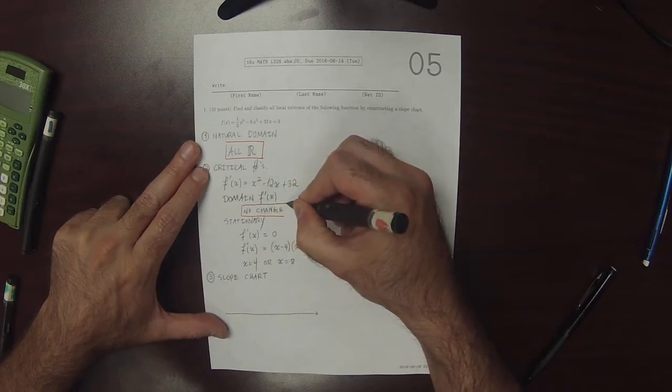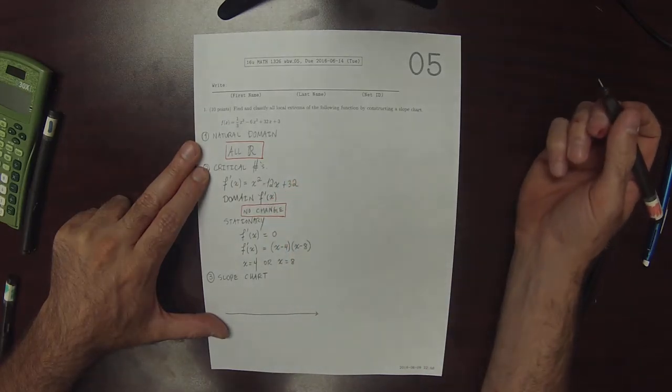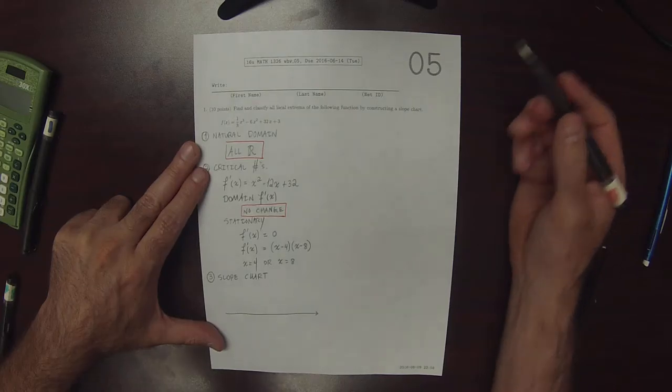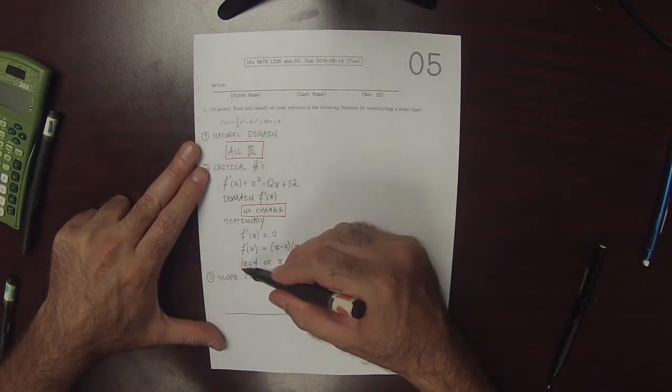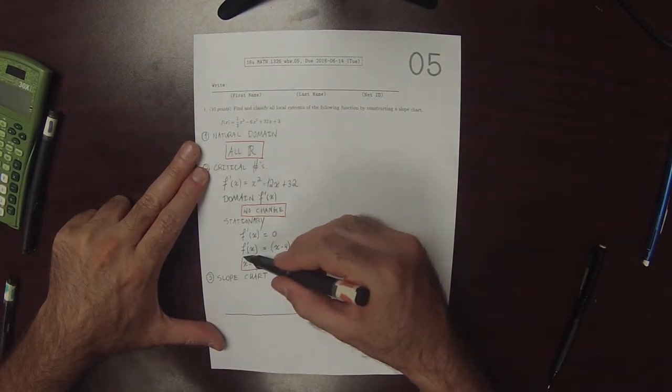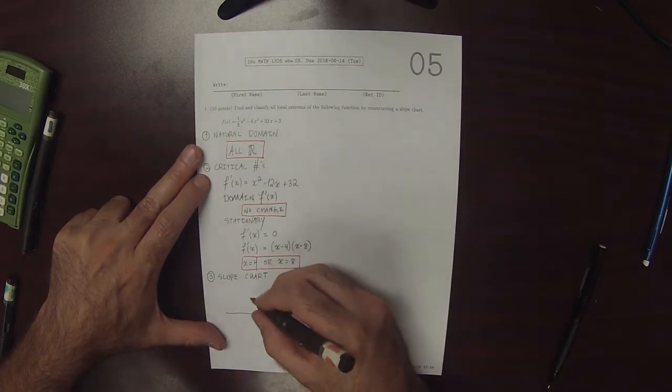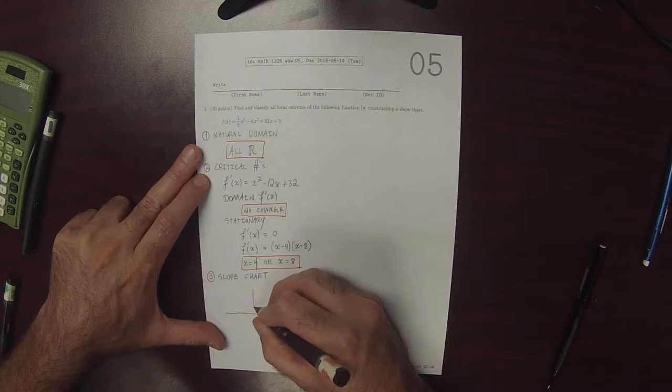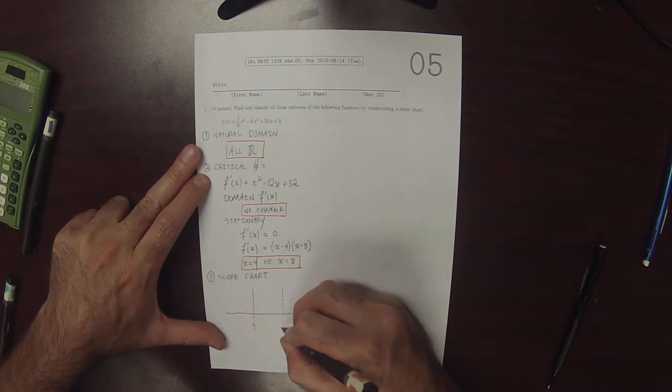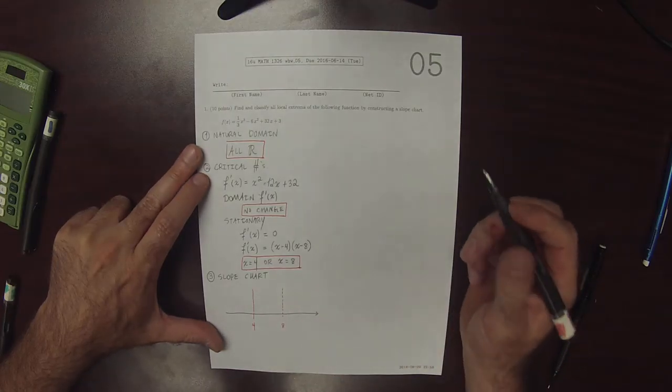we again found nothing. So there's nothing to report from that check. And then here, we found two fence posts. So both of them must be plotted. So this is 4, and this is 8.